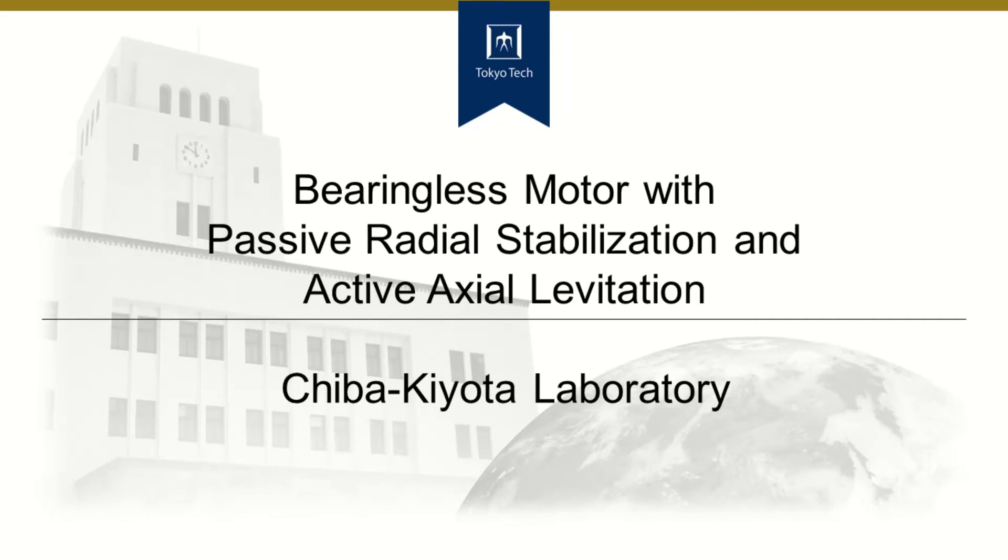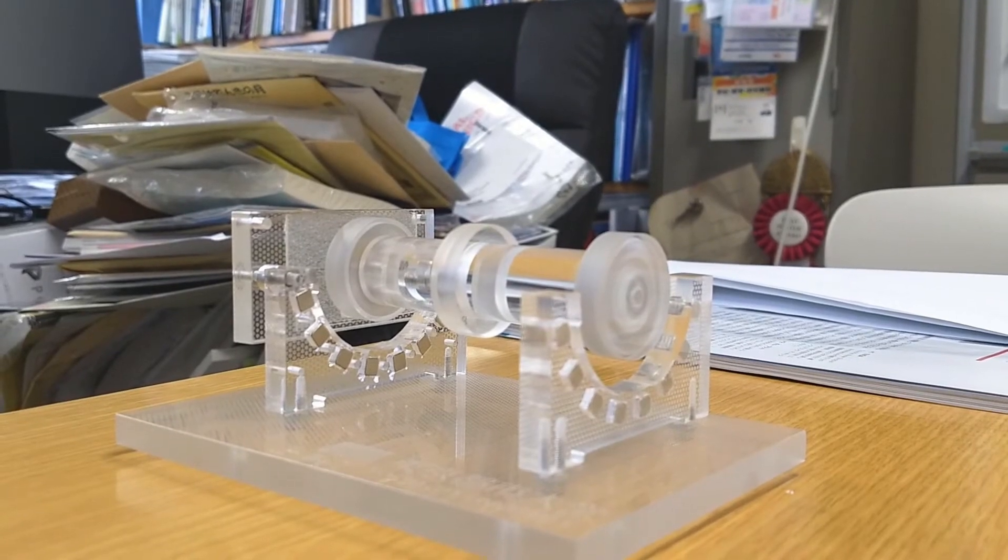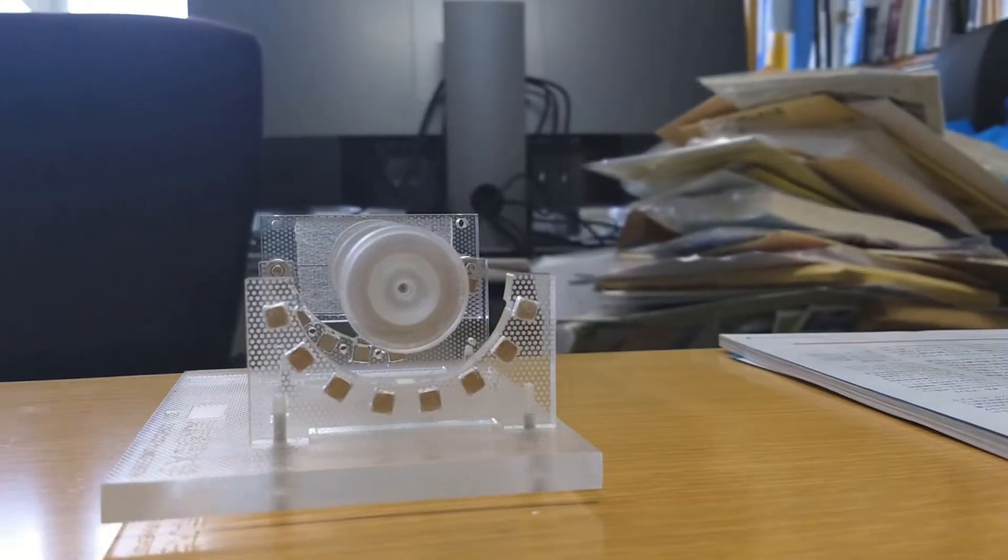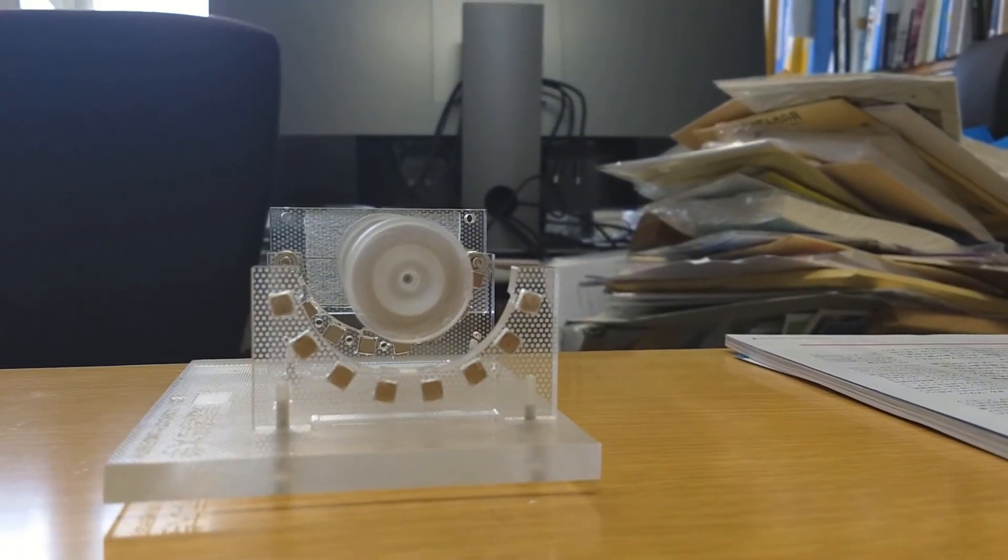In a previous video, we described the radial bearing built with permanent magnets. The repulsive magnetic forces between permanent magnets compensate the rotor weight and make the shaft levitate.